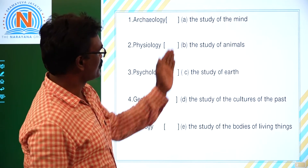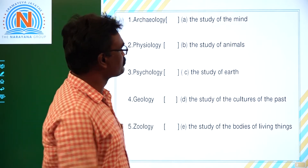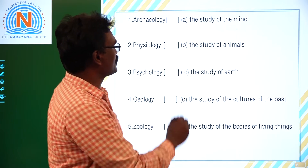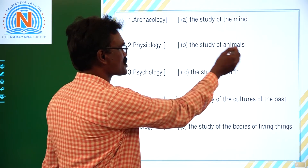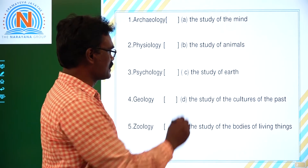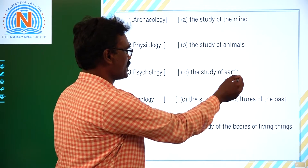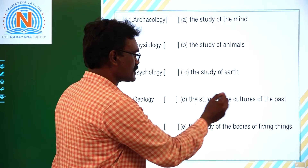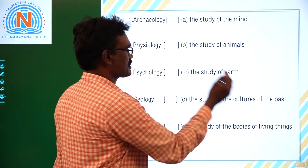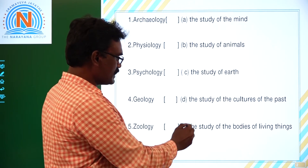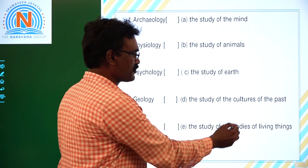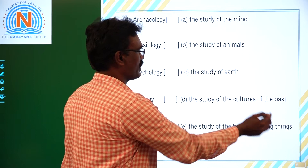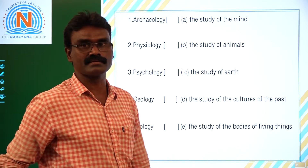So on this side they gave: A - the study of the mind. B - the study of animals. C - the study of earth. D - the study of the cultures of the past. E - the study of the bodies of living things.